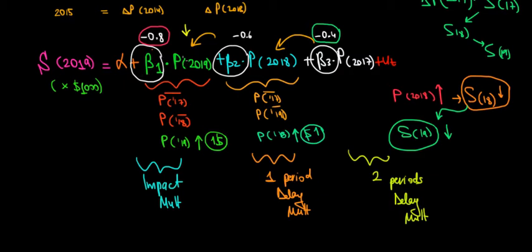So first of all, the effect of a change in price in the current period, assuming the current period is going to be 2019, the effect of a change in price in 19 on the sales in 2019. Well, that's going to be the minus 0.8. That's a direct impact.